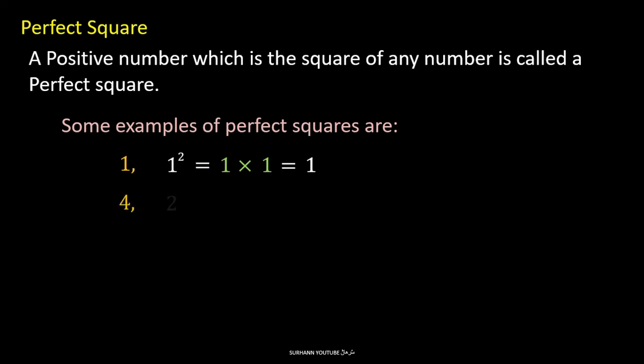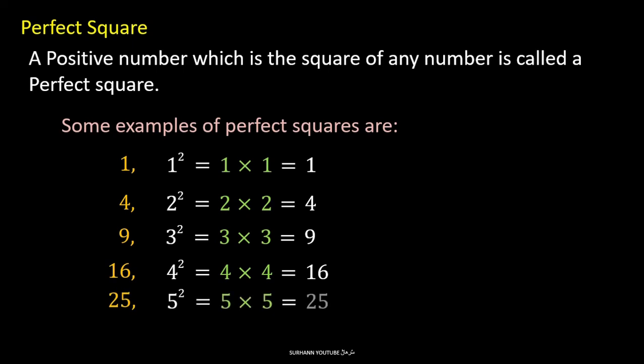4 is the square of 2, it's a perfect square. 9 is the square of 3. 16 is the square of 4. 25 is the square of 5, and so on. These are some examples of perfect square.